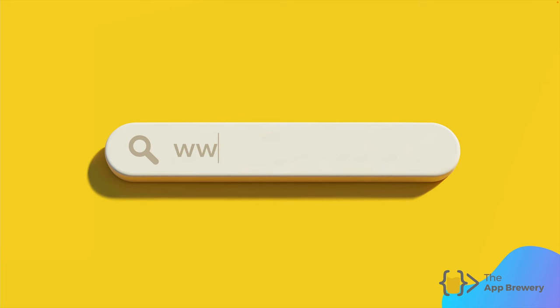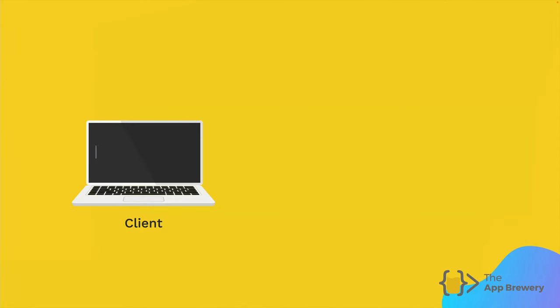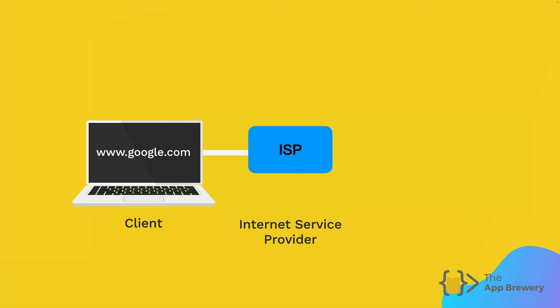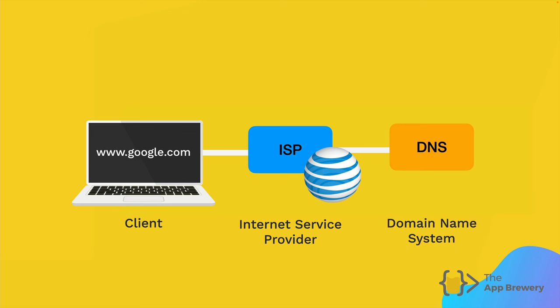Let's say that you're sitting at home on your computer and you type in google.com because you want to head over to the main Google homepage. What happens behind the scenes is that your browser will send that message to your ISP, or your internet service provider. These are the people who you pay to be able to access the internet. If you live in the US, that will be AT&T or Comcast. And if you're in the UK, there'll be something like BT or TalkTalk. The message that you're sending the ISP is: I want to see google.com. And the ISP will then relay that message to something called a DNS server, which stands for a domain name system server.